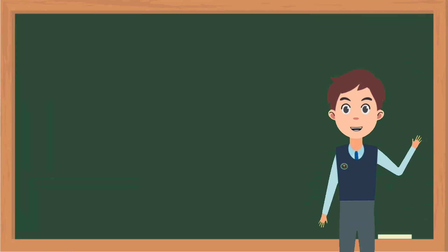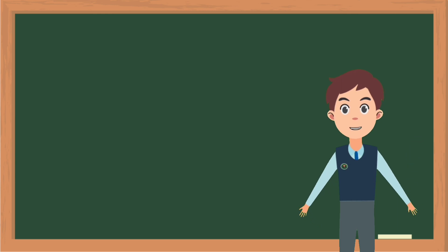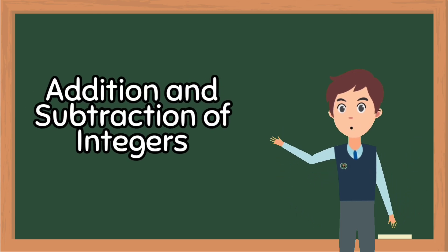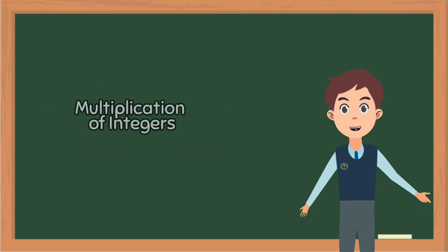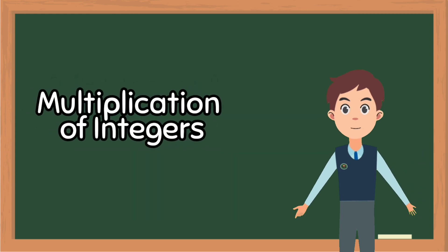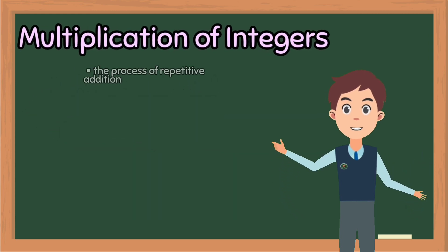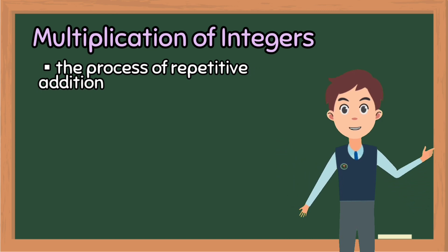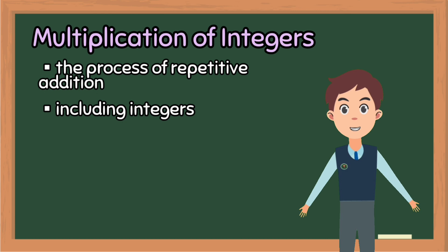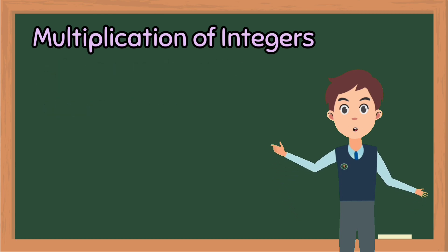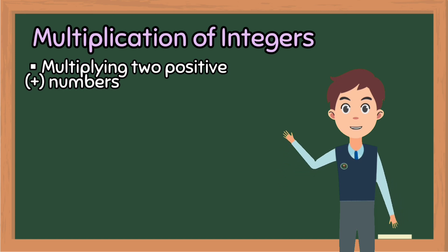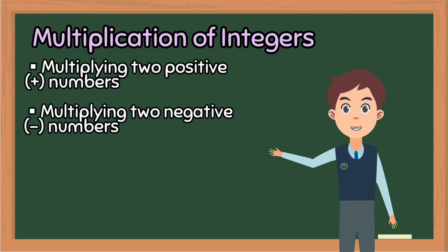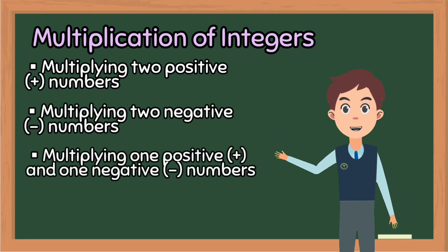Good day children, it's nice to see you again. Welcome to our new video. On our last episode we learned addition and subtraction of integers. On this episode we'll learn how to multiply integers. Multiplication of integers is the process of repetitive addition including positive and negative numbers, or we can simply say integers. When we come to the case of multiplication of integers, the following cases must be considered: multiplying two positive numbers, multiplying two negative numbers, and multiplying one positive and one negative number.